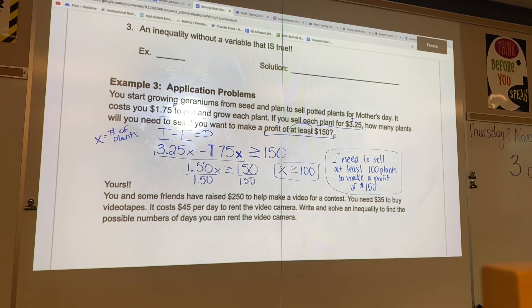In case you're struggling with this one, I'm going to read through it and we can set it up together. You and some friends have raised $250 to help make a video for a contest. You need $35 to buy videotapes. It costs $45 per day to rent the video camera. Write and solve an inequality to find the possible number of days you can rent the video camera.